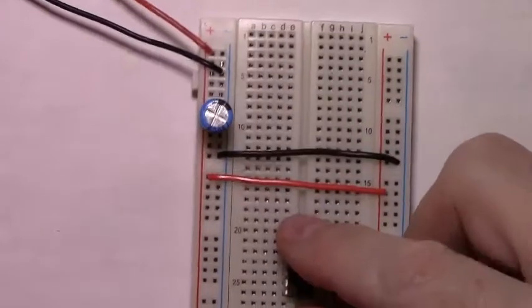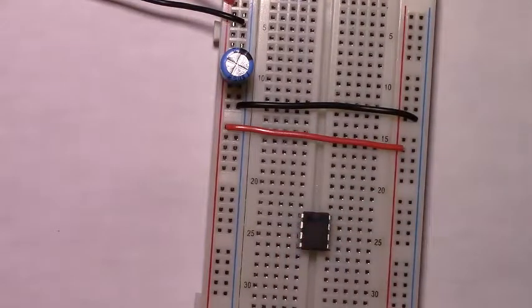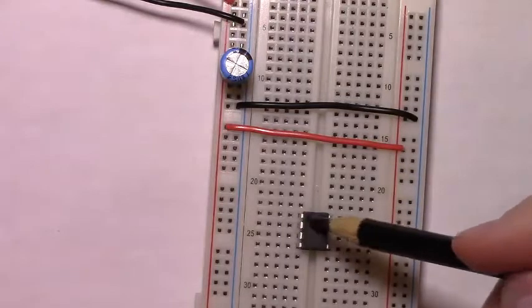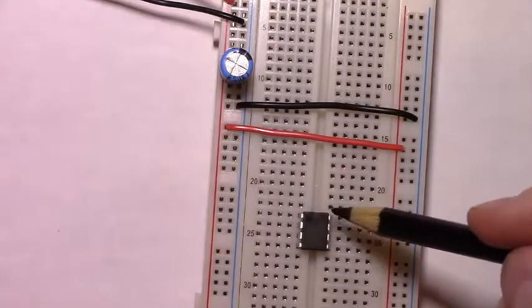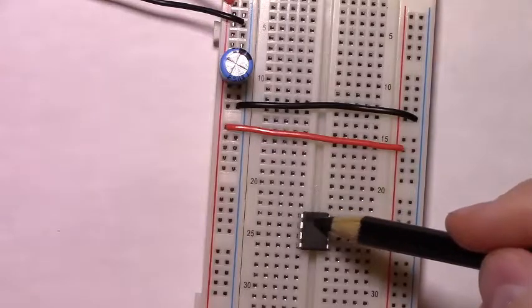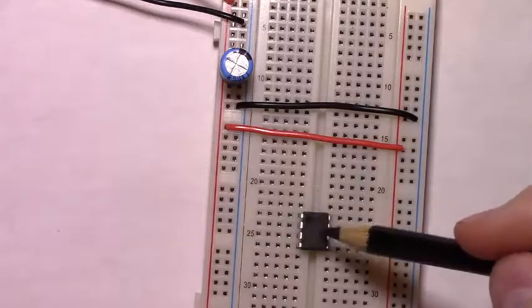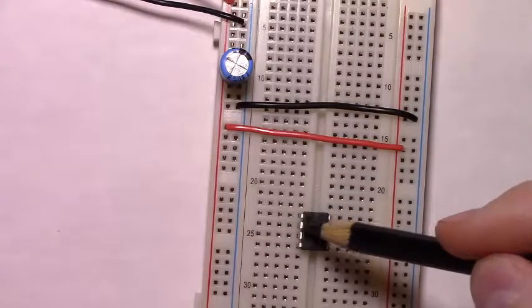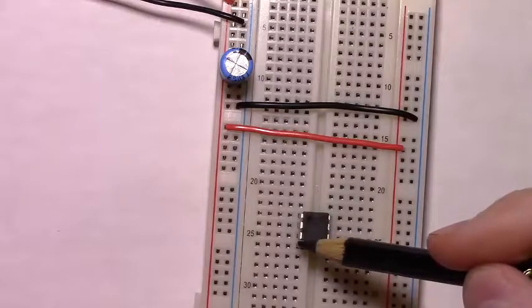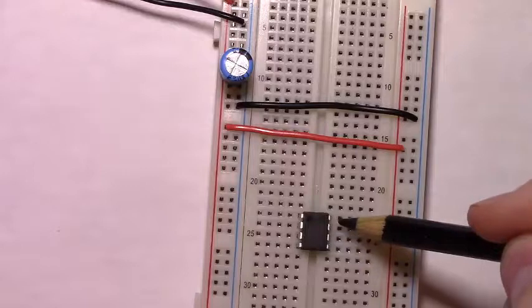Then, one will want to place their 555 timer in the board. Notice the timer I'm using has a small indentation indicating pin 1. It also has this cup at the very top of the chip, also indicating where the pin count starts. This is pin 1, 2, 3, 4, 5, 6, 7, 8.